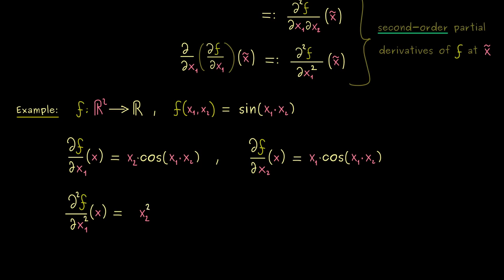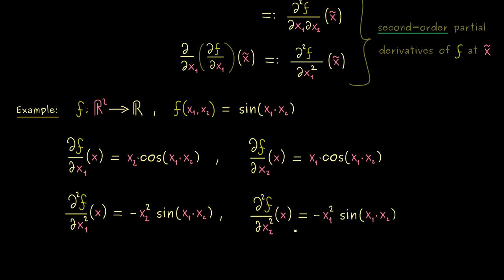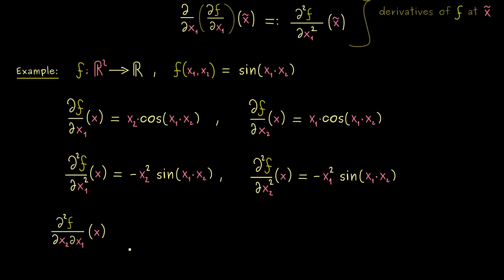Similarly, ∂²f/∂x₂² gives −x₁² · sin(x₁x₂). Now for the mixed second-order partial derivatives: taking ∂f/∂x₁ = x₂ · cos(x₁x₂) and differentiating with respect to x₂ requires the product rule. The first term gives cosine of x₁x₂, and the second term gives minus sine with inner derivative x₁, so together with the x₂ factor we get −x₁x₂ · sin(x₁x₂). So the result for ∂²f/(∂x₂ ∂x₁) is cos(x₁x₂) − x₁x₂ · sin(x₁x₂).